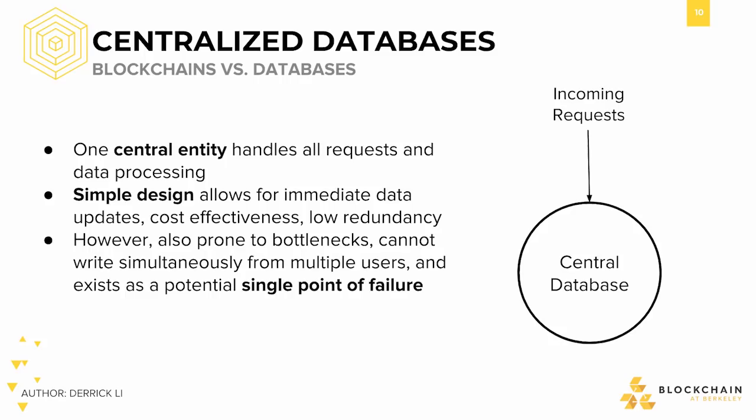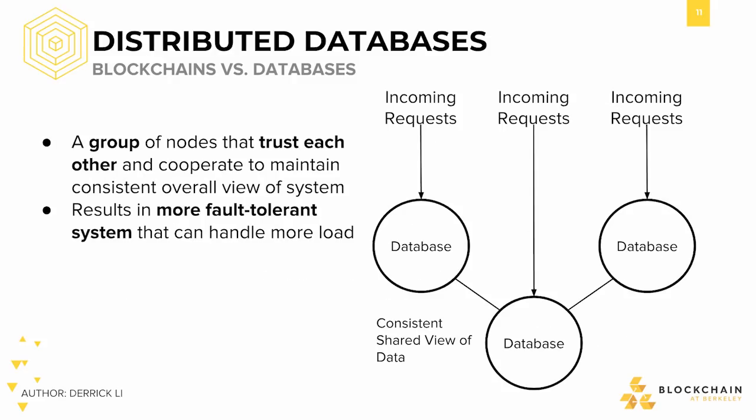However, centralized databases also have many inherent disadvantages. They are prone to bottlenecks, lack simultaneous write access by multiple users to the same dataset, and act as a single point of failure. On the other hand, distributed databases consist of groups of nodes which trust each other and cooperate to maintain a consistent view of the overall system. Because there's no longer a single point of failure, the system is more fault tolerant and can handle more demand by distributing load evenly across all nodes.